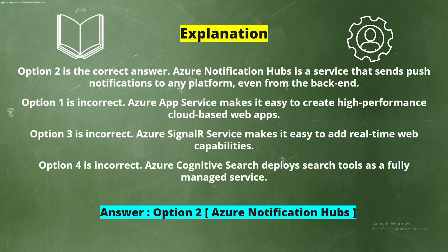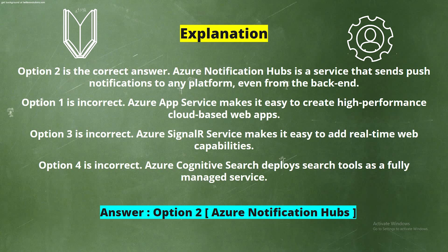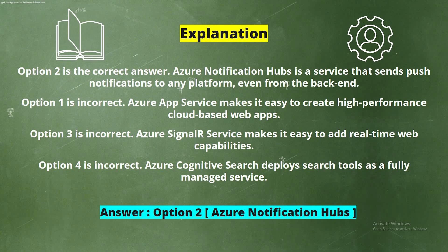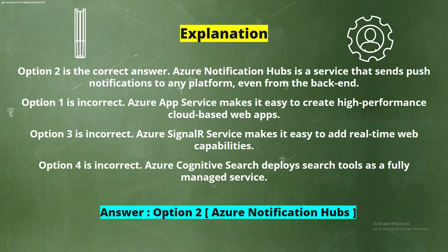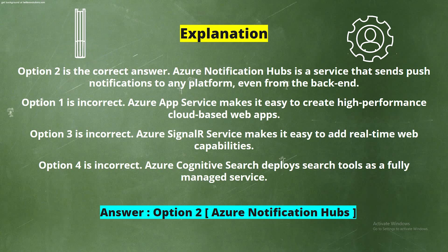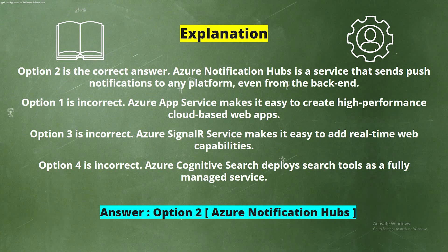Option 1 is incorrect. Azure App Service makes it easy to create high-performance cloud-based web apps. Option 3 is incorrect. Azure SignalR Service makes it easy to add real-time web capabilities. Option 4 is incorrect. Azure Cognitive Search deploys search tools as a fully managed service.